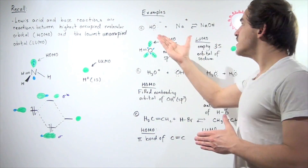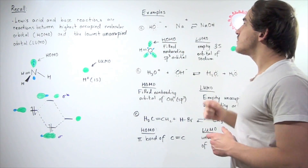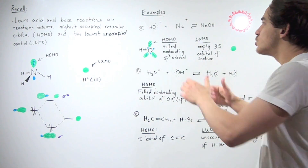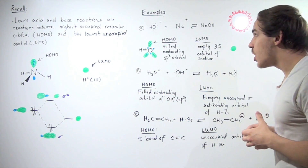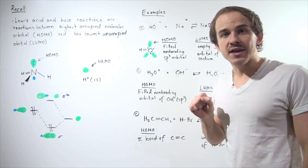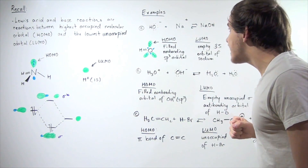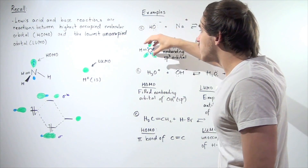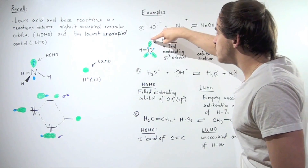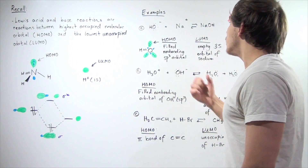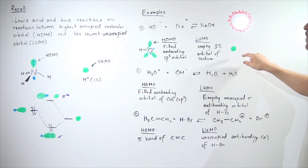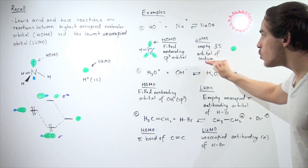Let's look at example A. In this reaction, we have a hydroxide with a negative charge interacting with a sodium ion with a positive charge, forming sodium hydroxide. Which one has the HOMO and which one has the LUMO? Clearly, hydroxide is our base because it has a pair of electrons it can donate to grab another atom. So that pair of electrons — and the orbital it's found in — must be the HOMO. The highest occupied molecular orbital is the filled non-bonding sp3 hybridized molecular orbital. The LUMO is the empty 3s orbital of our sodium atom.